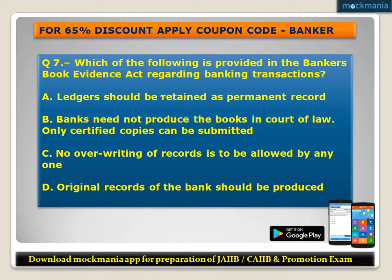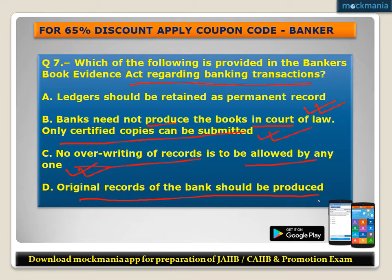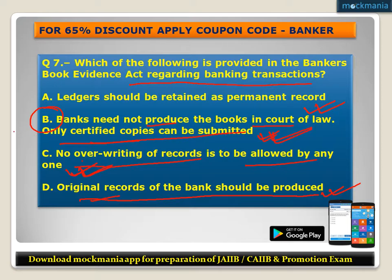Question number seven: Which of the following is provided in the Bankers Book Evidence Act regarding banking transactions? Options: A) ledgers should be retained as permanent record, B) banks need not produce the books in court of law - only certified copies can be submitted, C) no overwriting of record is to be allowed by anyone, D) original records of the bank should be produced. The correct answer is B. Under the Bankers Book Evidence Act, banks need not produce the books in court of law; only certified copies can be submitted.